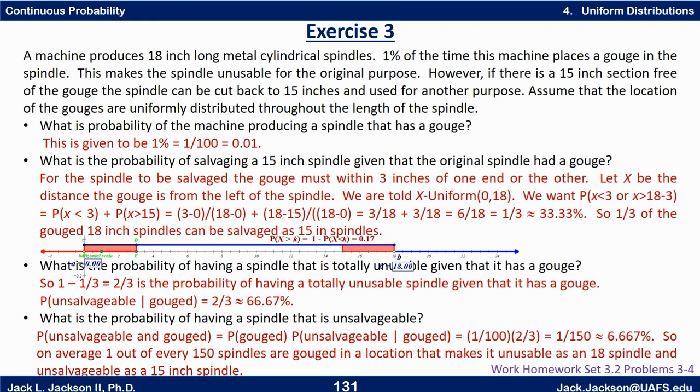So what's the probability of having a spindle that is totally unsalvageable given that it has a gouge? That's going to be, well, 1 minus what we just said there. So it's 1 minus 1/3 is 2/3 is the probability of having a totally unusable spindle given that it has a gouge. Now, notice that is a conditional probability. That's the probability of unsalvageable given that we know that it has a gouge.